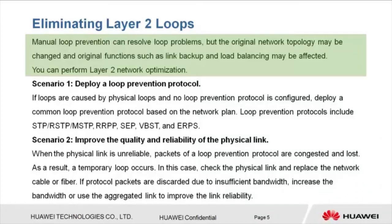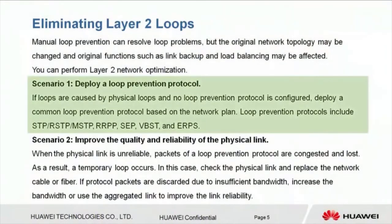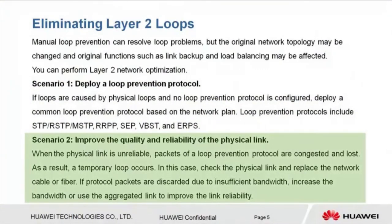You can also perform Layer 2 network optimization. Scenario 1: Deploy a loop prevention protocol. If loops are caused by physical loops and no loop prevention protocol is configured, deploy a common protocol such as STP based on the network plan. Scenario 2: Improve the quality and reliability of the physical link. When the physical link is unreliable, protocol packets are congested and lost, causing a temporary loop. Check the physical link and replace the network cable or fiber. If protocol packets are discarded due to insufficient bandwidth, increase bandwidth or use an aggregated link.